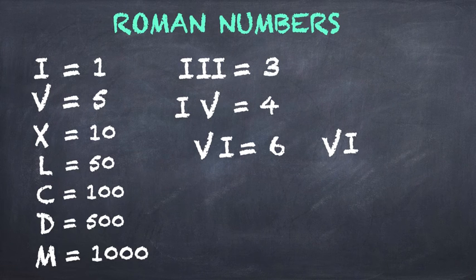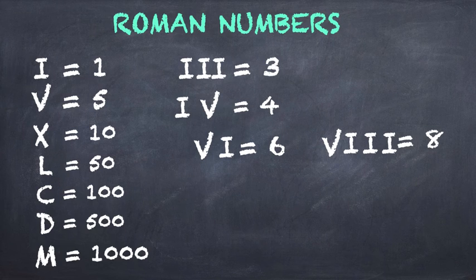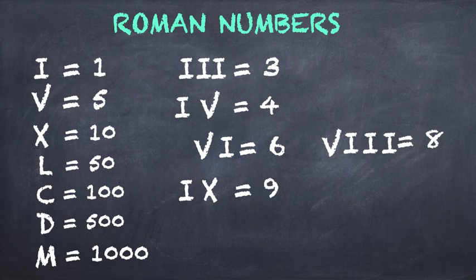So you have five, six, seven, eight, but not a nine because in that case you need an X with an I to the left. Then you have nine.